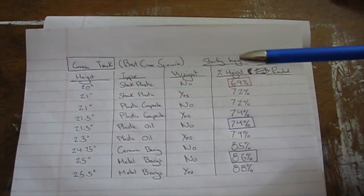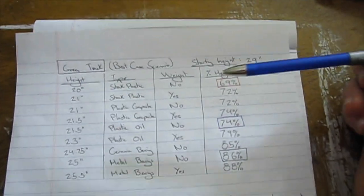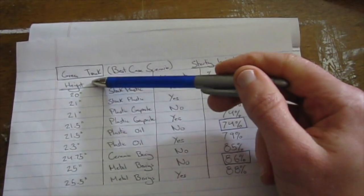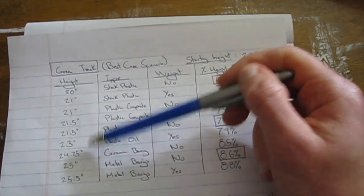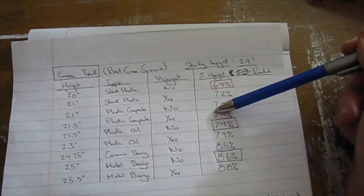All right, doing some quick math here and figuring out the percentage of how high it went back up. Each car had a starting height of 29 inches and we figured out the ending height, so we figured out the percentage of how high it reached back up.